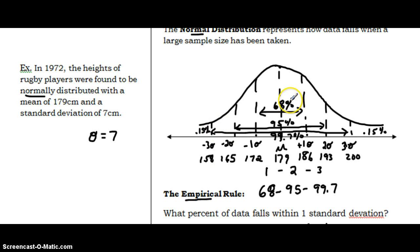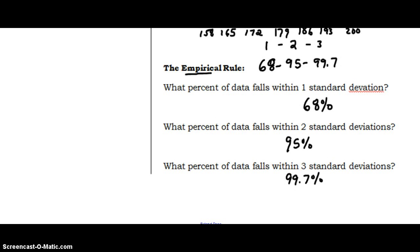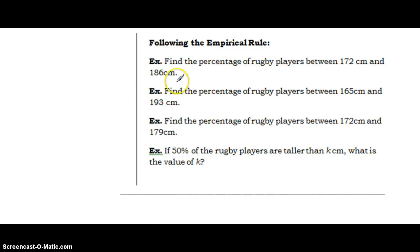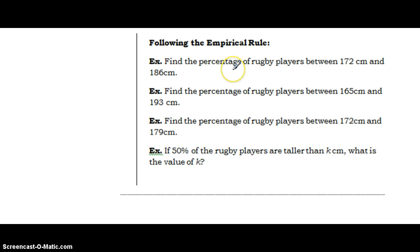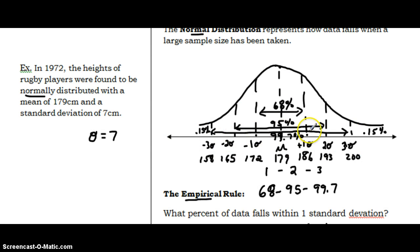This shows that 68% of the data falls within heights of 172 to 186, and 99.7% of the rugby players fall within 158 centimeters to 200 centimeters. For the first question, 172 to 186 centimeters is within one standard deviation, so that is 68% of the data. For the second question, 165 to 193 centimeters is within two standard deviations, so that would be 95% of the data.